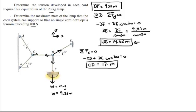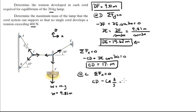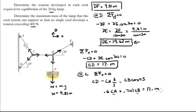At point C, we have a force going to the right, a force going up, and a force going down. The force going to the right is CD at 17 times the mass. The sum of forces in the X direction equals zero: CD minus CA times 3 over 5 minus CB times cosine of 45 equals zero. Cleaning this up: 0.6 CA plus 0.707 CB equals CD, which is 17 times the mass. We have an equation with three variables: CA, CB, and the mass.